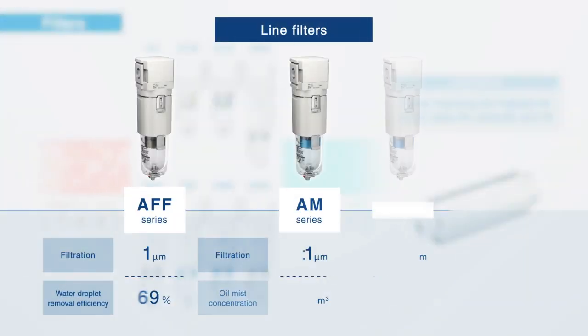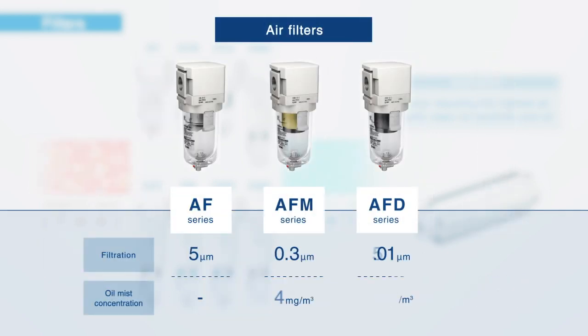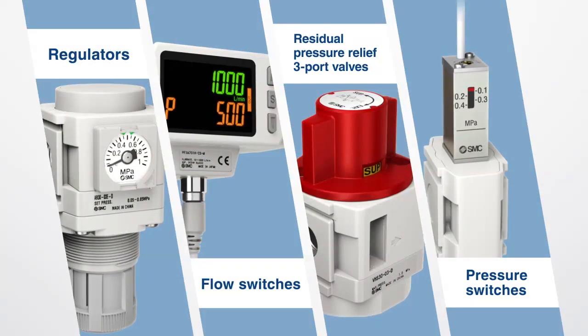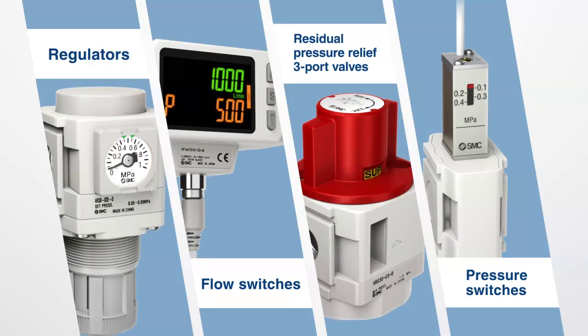The AFF, AM, AMD and AMK all come under our large flow rate filter range. The AF, AFM and AFD are compact type filters. Other products include regulators, flow switches, residual pressure relief three-port valves and pressure switches.